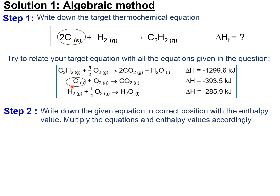In the second thermochemical equation, there are two carbons here and one in the target, so note that. The position of carbon must align with the position of carbon in the target thermochemical equation, which should be in the reactant. Next, for hydrogen gas, it should also be in the reactant side. Looking at the three equations, hydrogen gas appears in the third thermochemical equation — circle it. One mole here, one mole there, no problem.